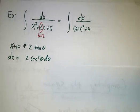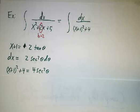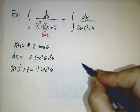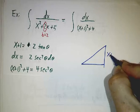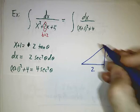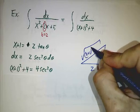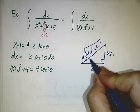dx is still 2 secant squared theta d theta. And now instead of x squared plus 4 being 4 secant squared theta, it's x plus 1 squared plus 4 is 4 secant theta. And our triangle is x plus 1 and 2. And over here, we have the square root of x plus 1 squared plus 4.